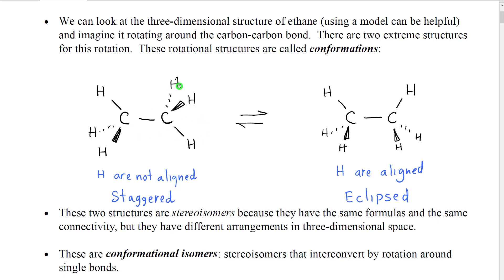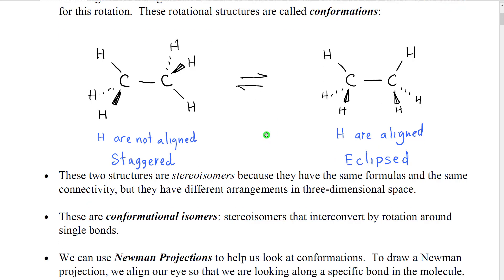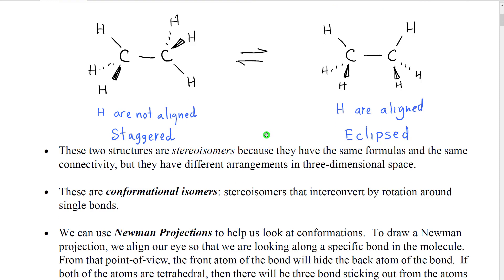By rotating around this single bond, rotating these hydrogens, we can rotate them so that the hydrogens completely align and the angle between them is zero degrees. We call this the eclipsed structure. Now these two structures are technically stereoisomers because they have the same formulas, the same connectivity, but they have a different arrangement of atoms in three-dimensional space.